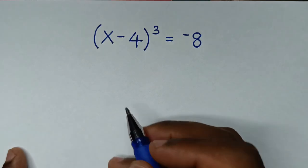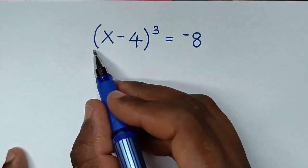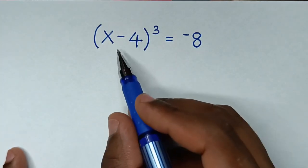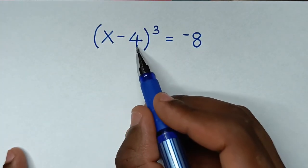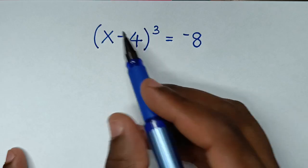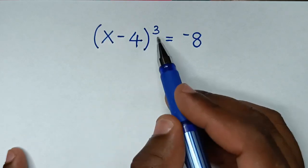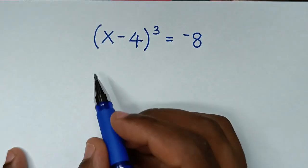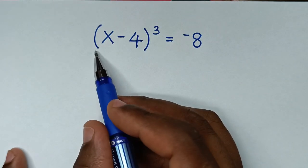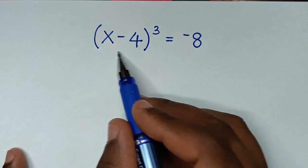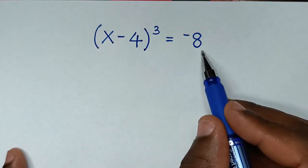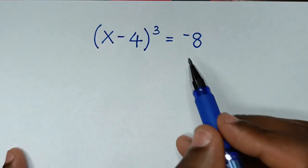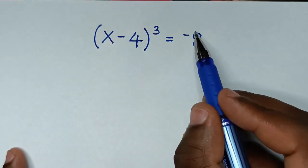Hello, you are welcome to solve this math problem, which is (x - 4)³ = -8. We need to find the values of x from this equation. In the first step, we'll take this negative 8 to the left side.